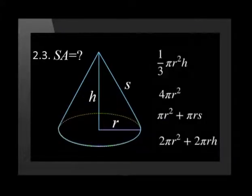Here are four formulae. Select which formula is the correct one for calculating the surface area of this object. A third pi r squared times h, four times pi r squared, pi r squared plus pi r times s, two pi r squared plus two pi r times h.